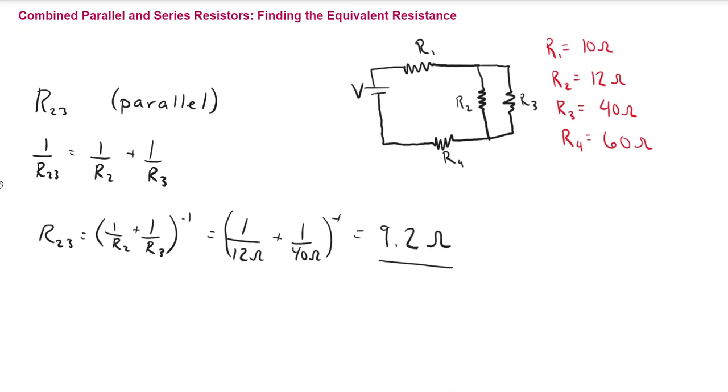So this is the combined resistance of R2 and R3. Now, what we essentially did was we made this into a series circuit, or a circuit that we can look at and treat as a series circuit. So now we have R1 and then R23 here, and then R4.